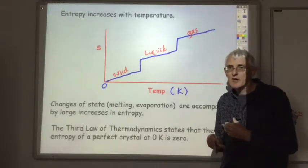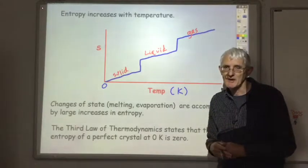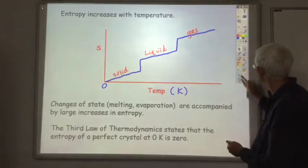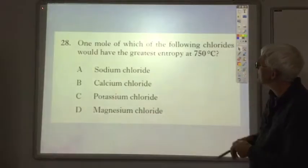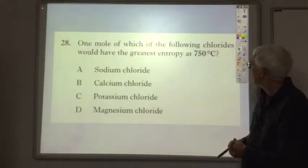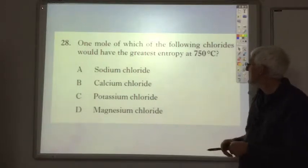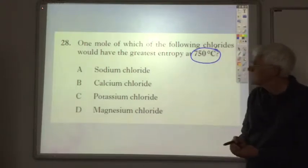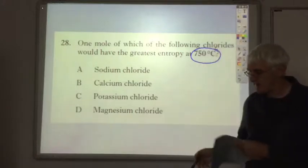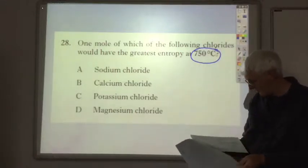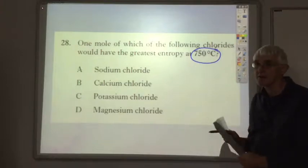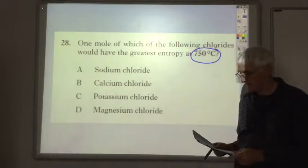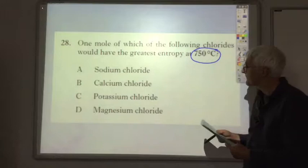Okay, so we've got a look at a couple of multiple choice past paper questions, which are based on this information, although you may not recognize it as such at first. So one mole of which of the following chlorides would have the greatest entropy at 750 degrees C, and the temperature is important. To help you with this question, I suggest you look up page nine of your data booklet. Okay, so pause the tape, have a wee look at that and see if you can work out what's going on.